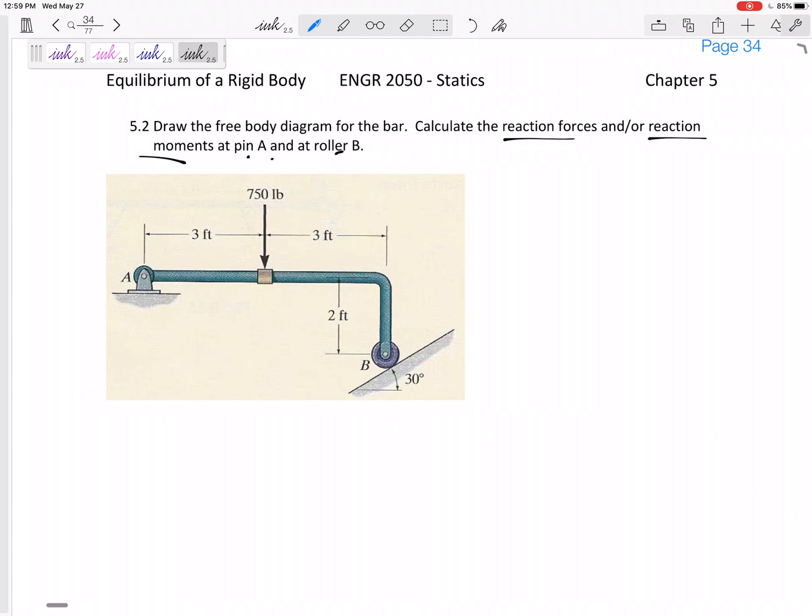If I was to draw a free body diagram, I think I'm going to just draw on top of this figure. I would have an Ax and an Ay because it's a pin, and then here I would have a force at B. This isn't Bx, it isn't By, it is at 30 degrees.